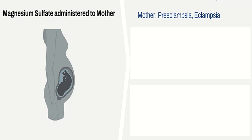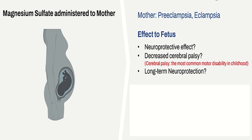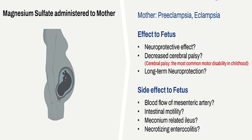When magnesium sulfate is administered to the mother for preeclampsia or eclampsia, we shouldn't underestimate its effect on the baby as well. Expected beneficial effects on the fetus include neuroprotection, decreased cerebral palsy — the most common motor disability in childhood — and long-term neuroprotection. Fetal side effects can include decreased mesenteric artery blood flow, affected intestinal motility, meconium-related ileus, and necrotizing enterocolitis.